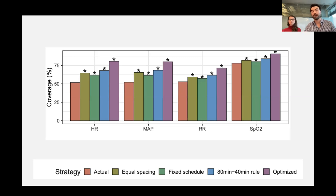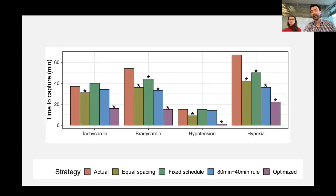That optimal strategy is the purple line here, and this simple prospective rule — observing patients every 40 minutes if they're unstable and 80 minutes if they're stable — turns out to be the second best. More importantly, these strategies can reduce the time lag in detecting important actionable abnormalities like low blood pressure, fast heart rate, or low oxygen saturation.